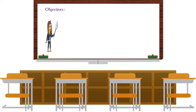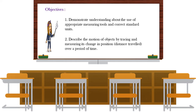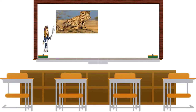The objectives of this lesson are: students are expected to demonstrate understanding about the use of appropriate measurement tools and correct standard units, and describe the motion of objects by tracing and measuring its change in position and distance traveled over a period of time.